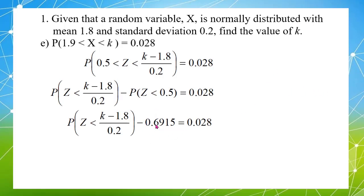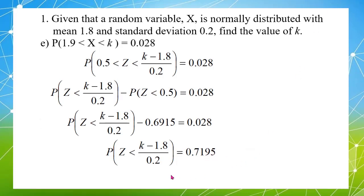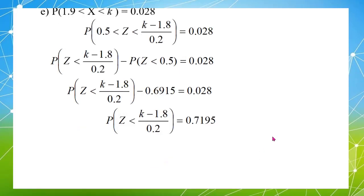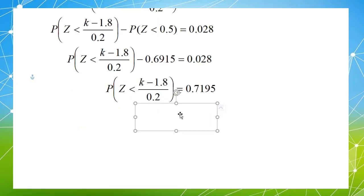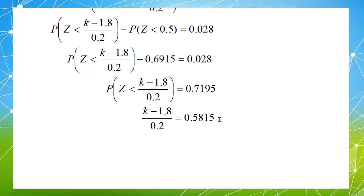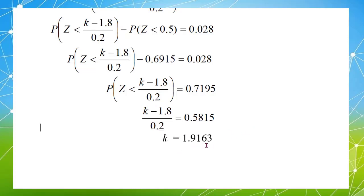Shifting 0.6915 to the right-hand side gives 0.7195. Using 0.7195 to look up the table, I find the Z value is 0.5815. From here, K equals 1.9163.